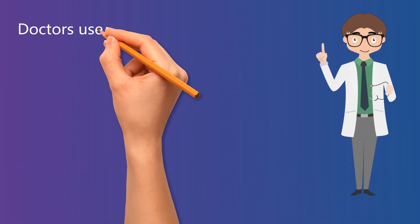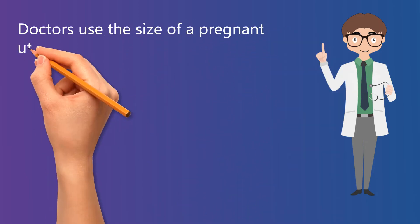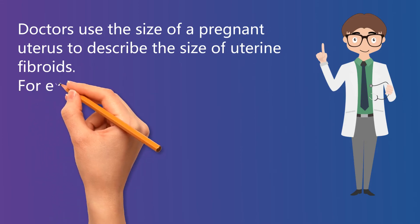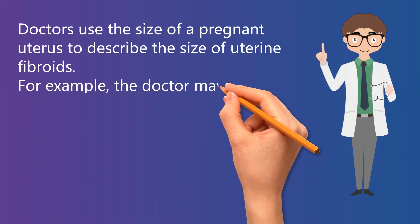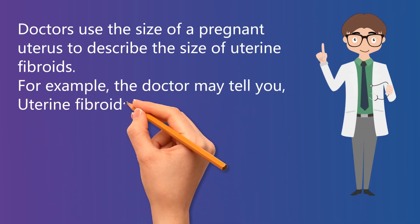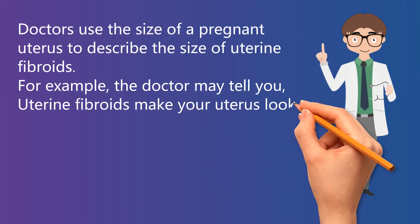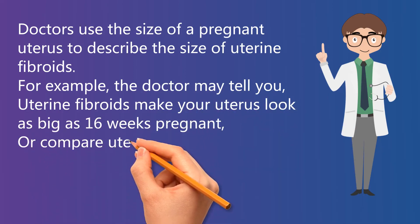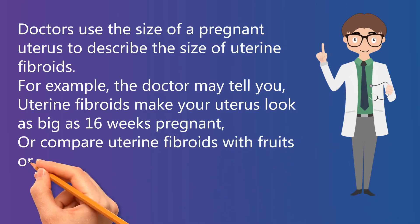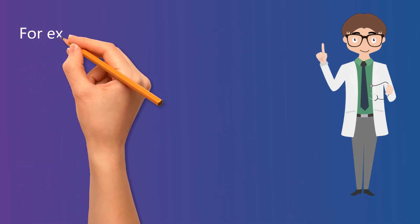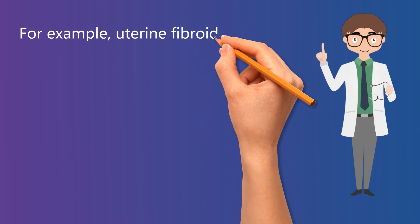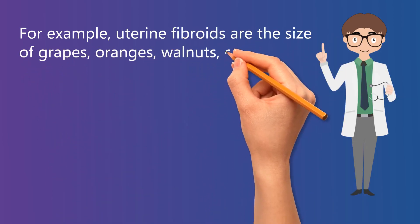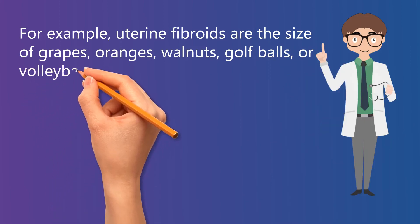Doctors use the size of a pregnant uterus to describe the size of uterine fibroids. For example, the doctor may tell you uterine fibroids make your uterus look as big as one six weeks pregnant, or compare uterine fibroids with fruits or balls — such as grapes, oranges, walnuts, golf balls, or volleyballs.